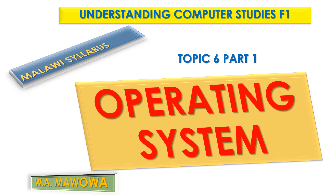System software is classified in different ways according to how they are acquired and what they do. We mentioned the operating system, utility software, language compiler, and language translator as types of system software. For applications, those are the ones the user uses frequently on the computer — for drawings, writing letters, or making calculations — there are specific application software for each purpose.